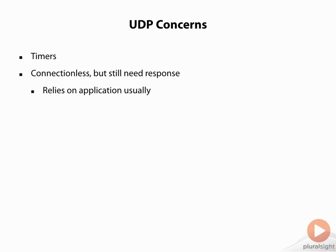UDP is connectionless, but we still need to receive a response. Typically, we're going to rely on the application to handle that response portion. DNS would be an example — when a DNS request goes out, it's a UDP request. The firewall has to allow for a DNS response, and so there's a concern with the timeout values there.